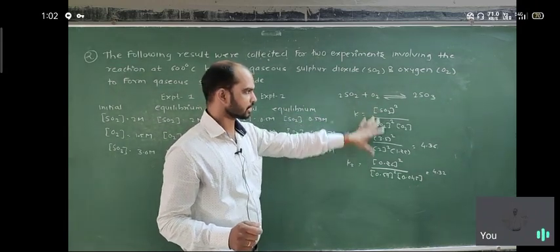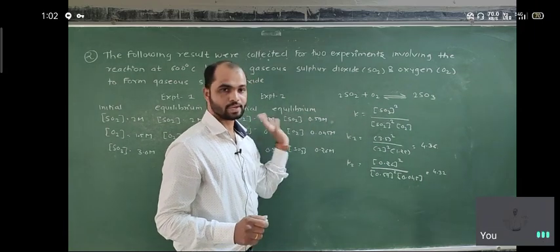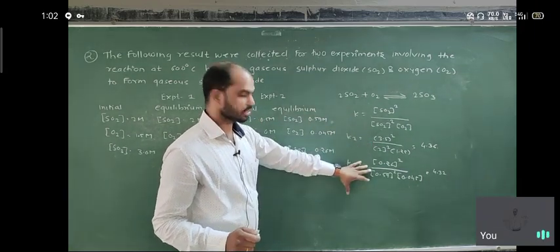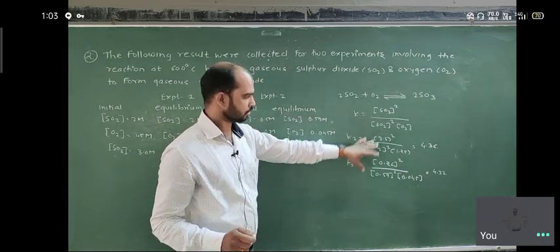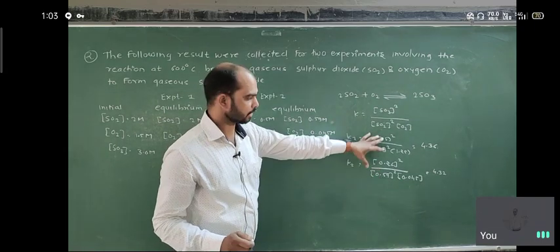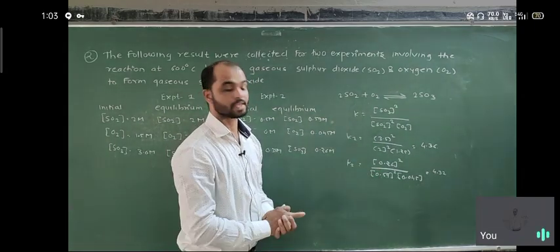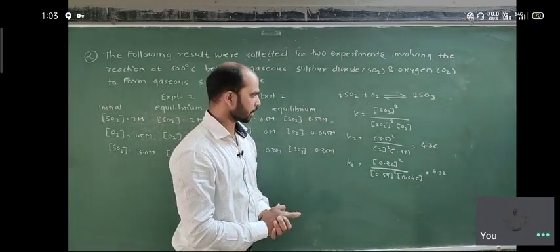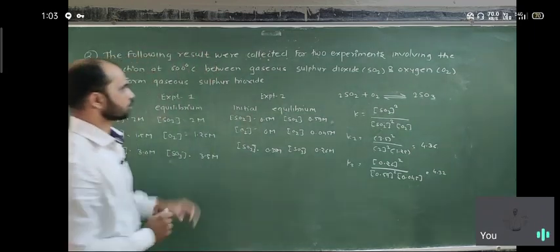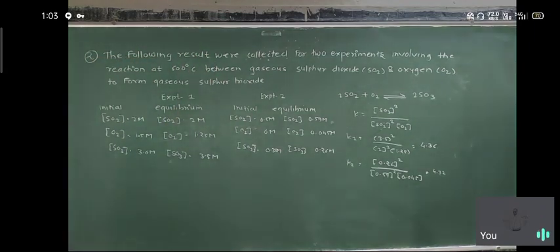First we balanced the equation, then we wrote the equilibrium constant expression. The reaction is the same in both experiments; we just substituted the values and got different answers, which means there is an error in the equilibrium constant. That is all about the second problem.